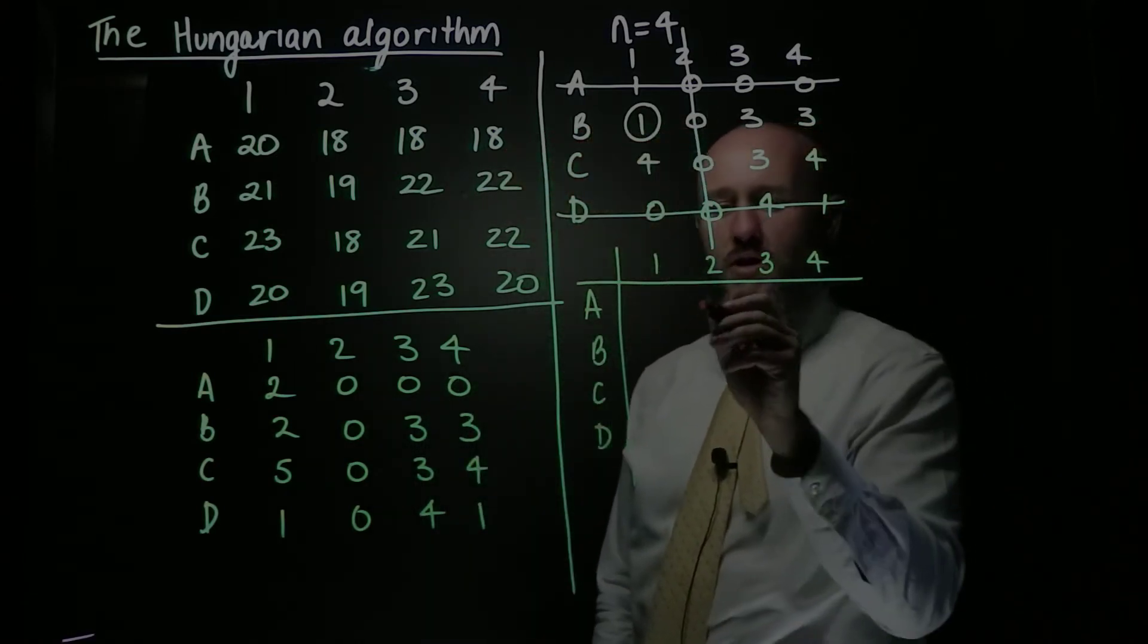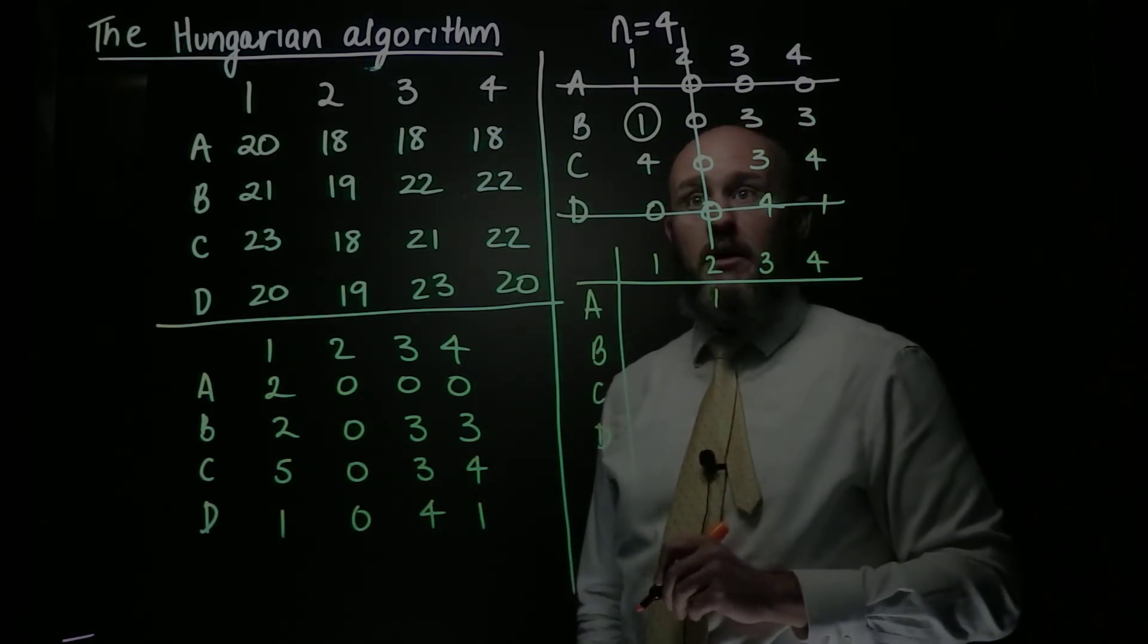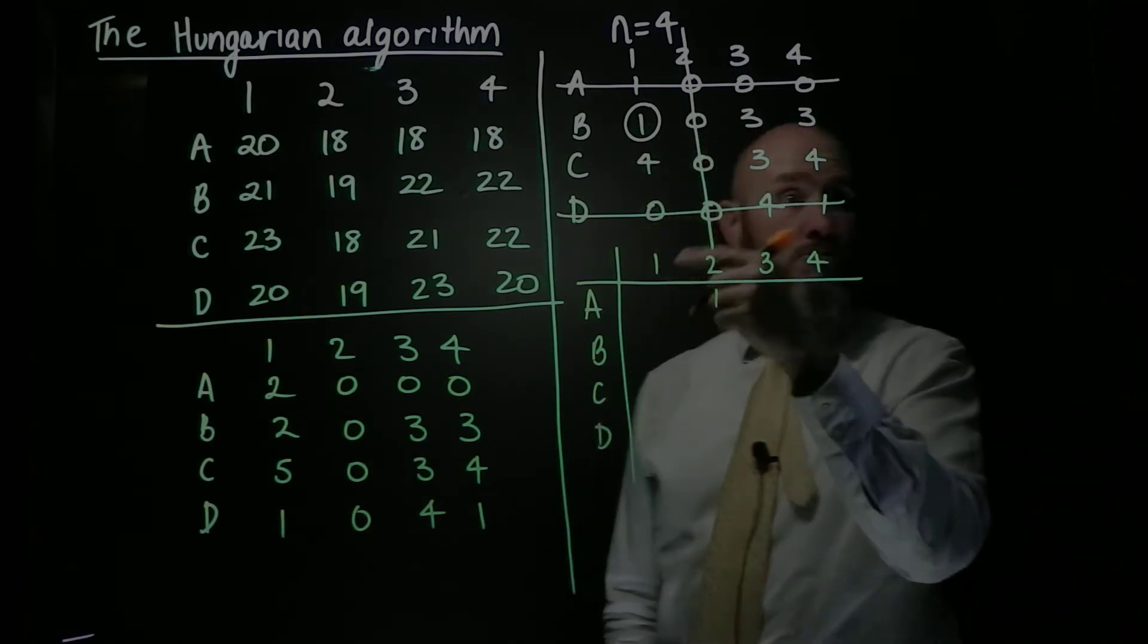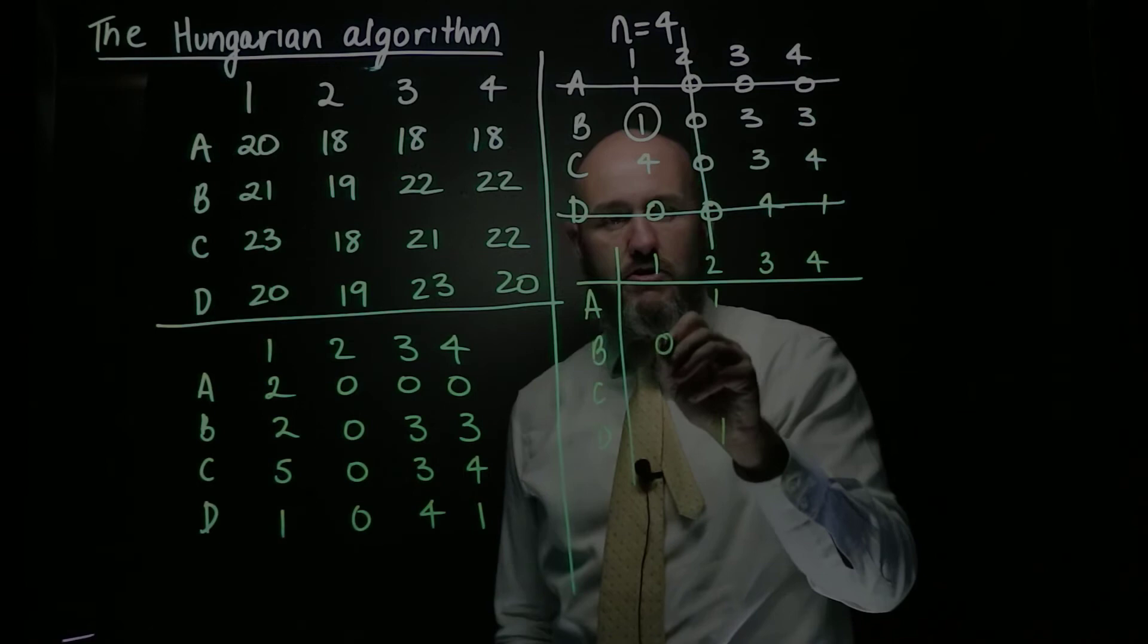So my double covered ones are A2, I'm going to add 1 to that, it's 1, and D2, that's also gone up to 1 now. And then I've, remember 1 is my minimum, so I'm subtracting it from my uncovered ones. So, my uncovered ones are B1, which is 0, because 1 minus 1 is 0.